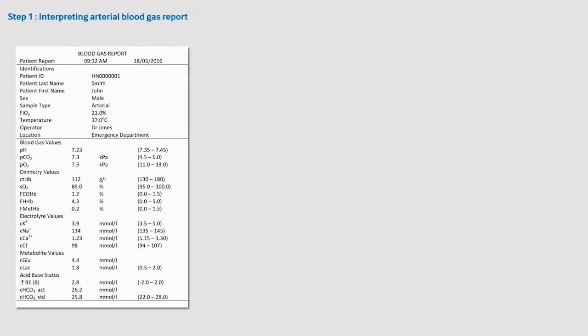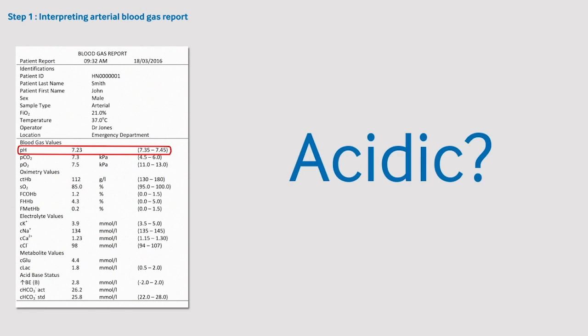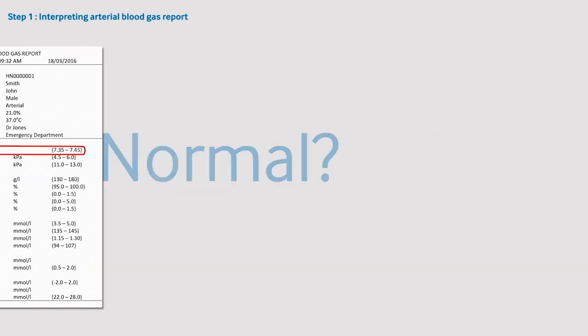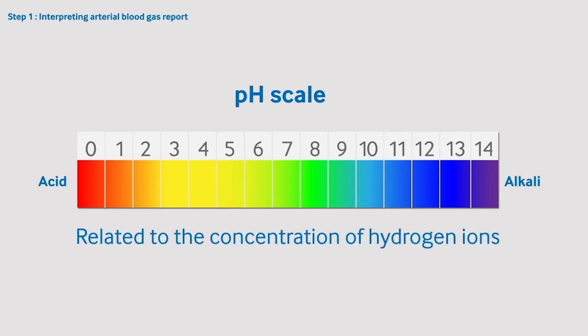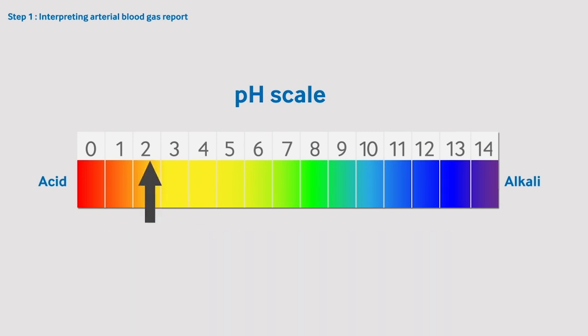The first step in interpreting an arterial blood gas report is to look at the pH and determine whether the sample is acidic, alkalotic, or normal. pH is a logarithmic scale related to the concentration of hydrogen ions. The lower the value, the more acidic the solution is; the higher the value, the more alkalotic.